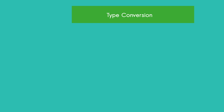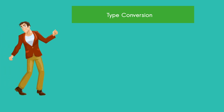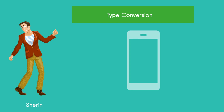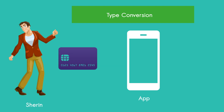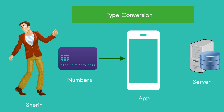Let's take a look at this example. If you are going to create an application, you can enter the credit card number. The credit card number is an integer number. That is the input number, and this input number will be encrypted on a server.